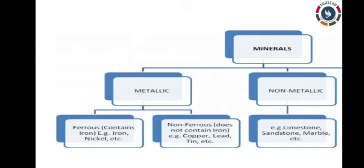Let's understand the classification of minerals. There are over 3000 different minerals, and to identify them we need to know their composition. Minerals are classified as metallic and non-metallic. Metallic minerals are hard substances and good conductors of electricity because they have components of metal, luster, and shine. They are found in igneous and metamorphic rocks.